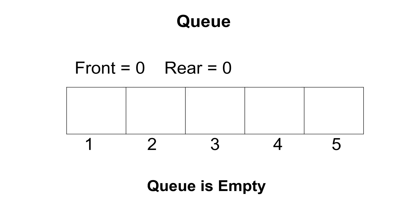Initially, queue is empty and that's the reason front and rear both pointers are pointing to index 0. Let's apply a few operations on the queue and see how it works.